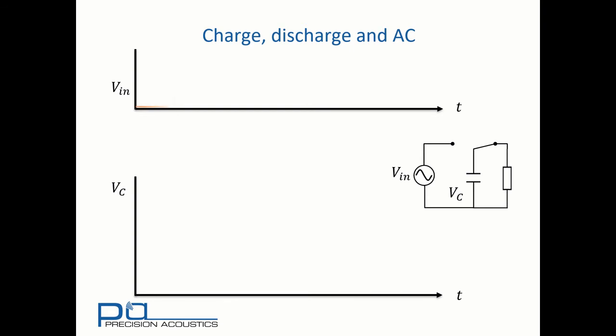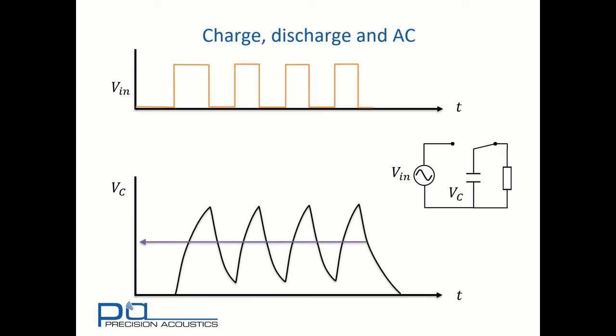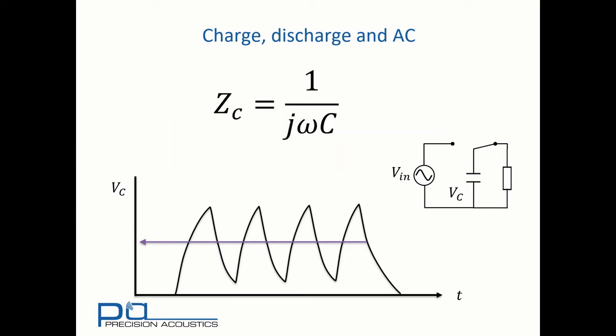But what happens if our applied input voltage changes more rapidly than the charge and discharge time of the capacitor-resistor combination? In this case, the voltage across the capacitor never quite reaches zero. And therefore, the response to AC is that the voltage across the capacitor is non-zero. In fact, if we look at the ratio of voltage to current, from our definition of impedance, we find that the impedance of a capacitor is 1 over j omega c. So that as omega increases, the net effect for the impedance of the capacitor is to decrease.